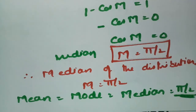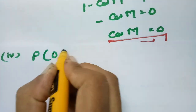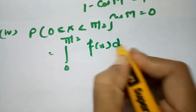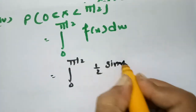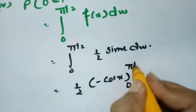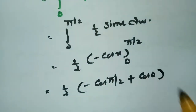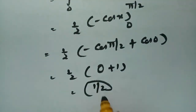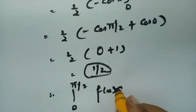Finally, we find P(0 < x < π/2) = integral from 0 to π/2 of f(x) dx = integral from 0 to π/2 of (1/2)sin(x) dx = (1/2)[−cos(x)] from 0 to π/2 = (1/2)[−cos(π/2) + cos(0)] = (1/2)[0 + 1] = 1/2. Therefore P(0 < x < π/2) = 1/2.